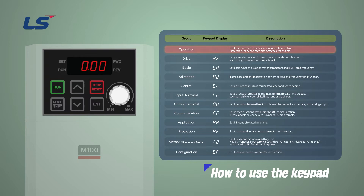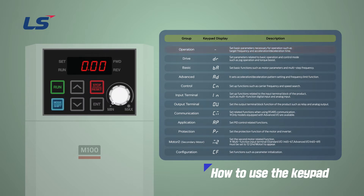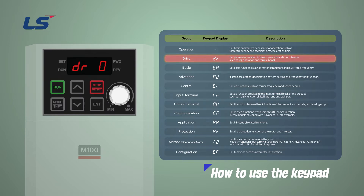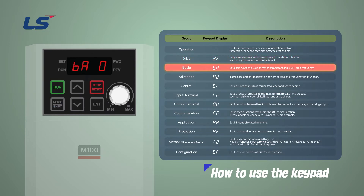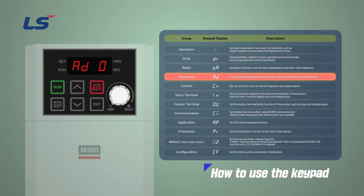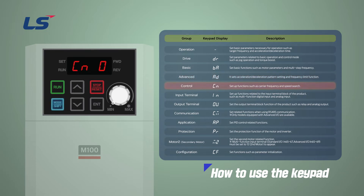When power is applied to M100, the first parameter group you can see is the operation group. If you press the Mode Shift key in order, you can move in order of the drive group, Classic Functional Group, Basic Function group, Exceptional Bumper function group,